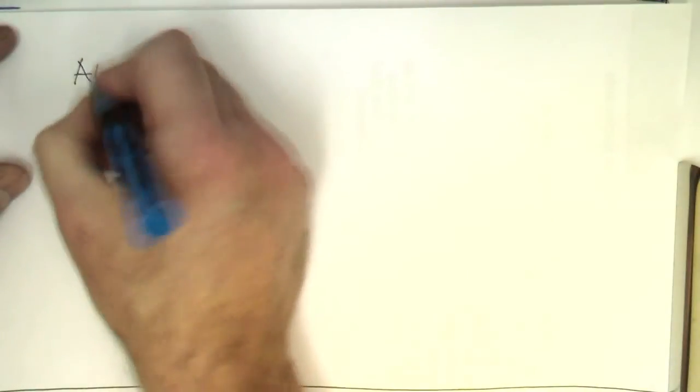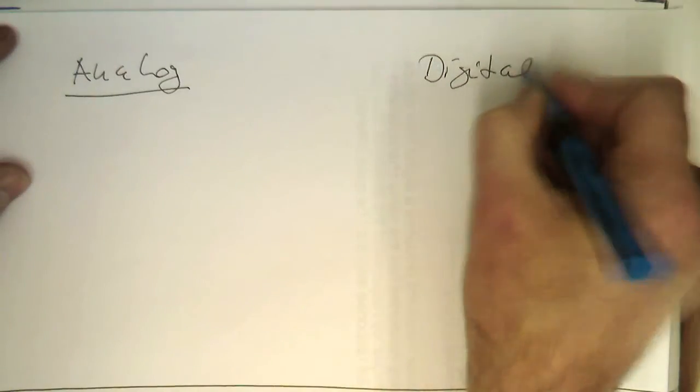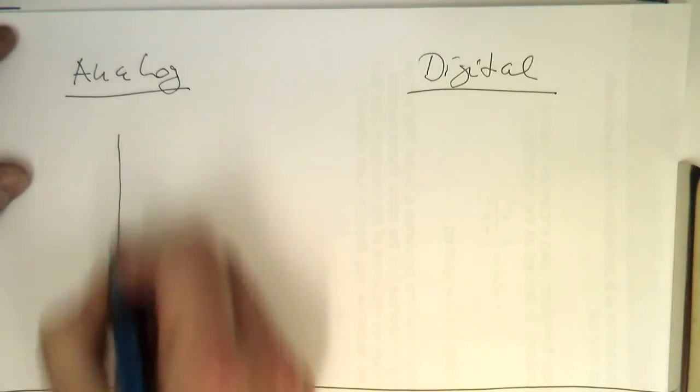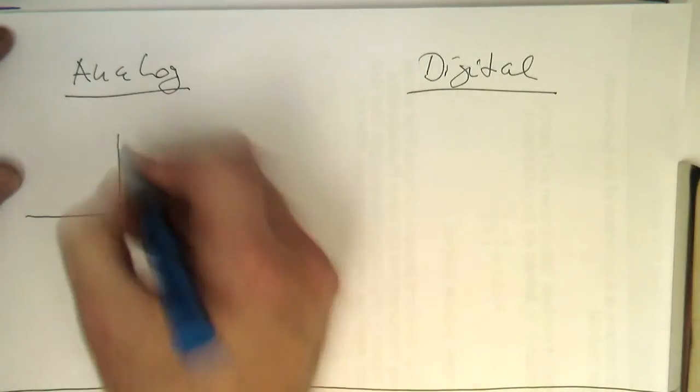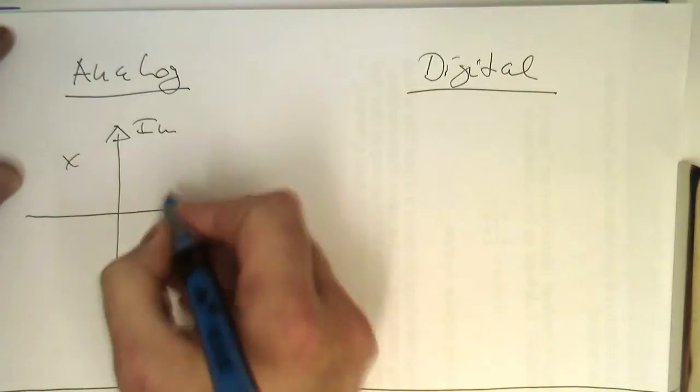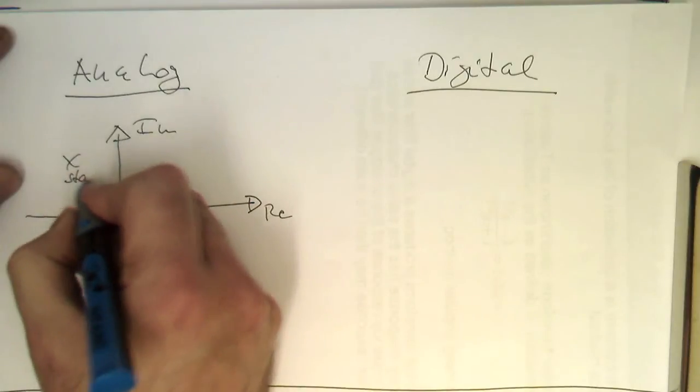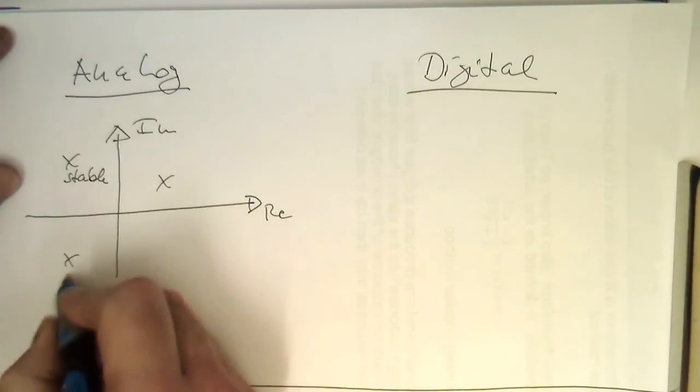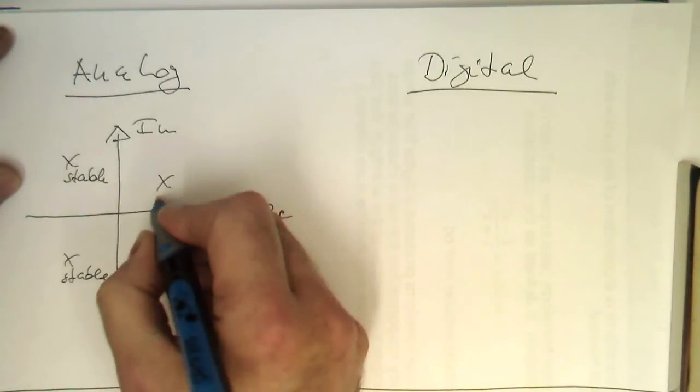So if we have here our analog domain and this is our digital one, here we've got our poles. That's real, that's imaginary. So we've got our poles here and this one is stable and this one is stable and this one is here unstable.